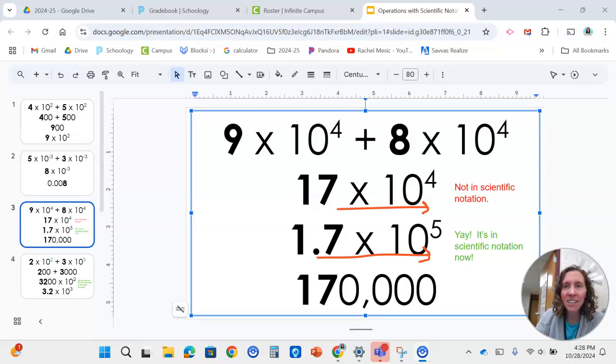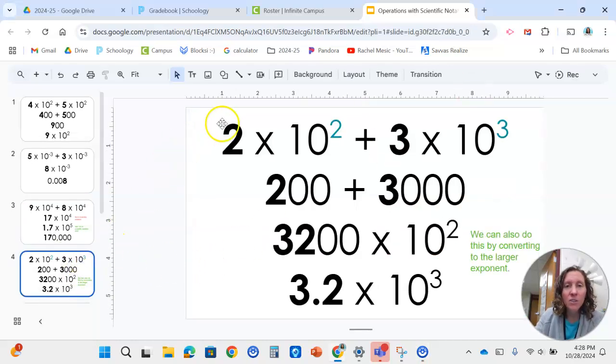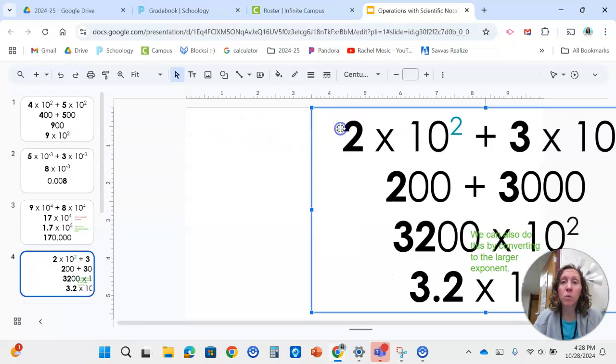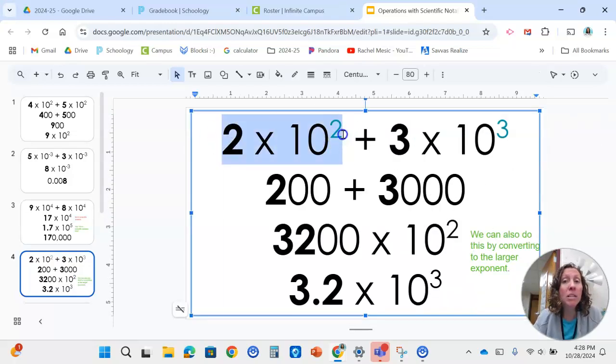So if we looked at this one, oh no, the exponents are not the same. Let's look at what this means. This first part means 200. This means 3,000. So if we add them together, it's 3,200. So notice in our final answer, we have a 3 as the exponent. That is matching the higher exponent from the original equation. So our goal is to convert to the higher exponent and then add or subtract.